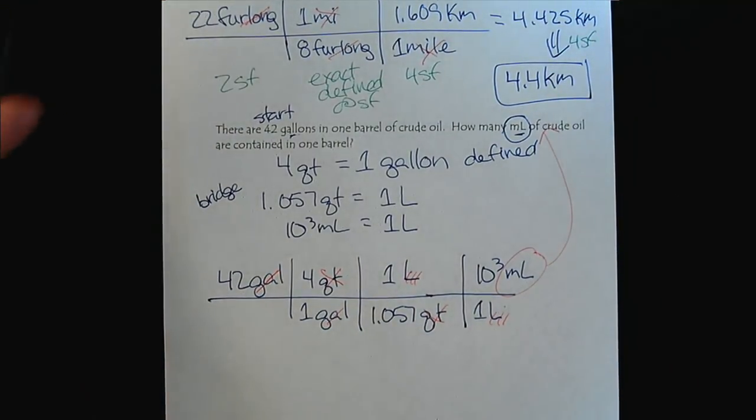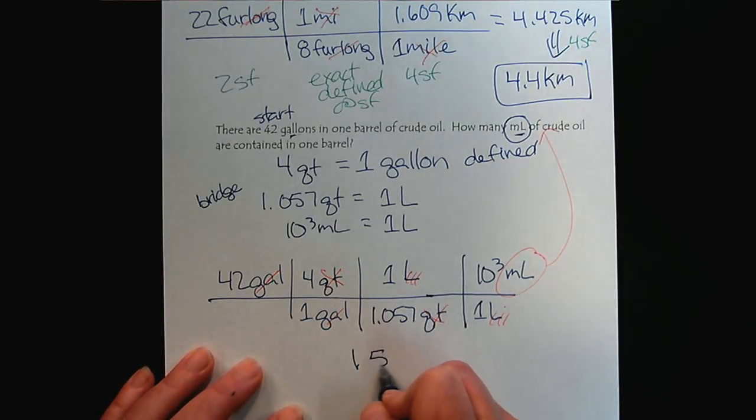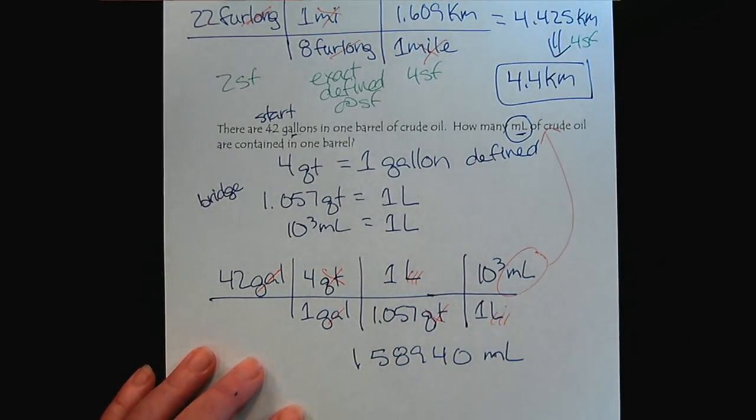So now that our units let us know that we've done a correct setup, we can go ahead and plug the numbers into our calculator. And we find out that this is a huge number. 158,940 milliliters. So there's the display from the calculator.